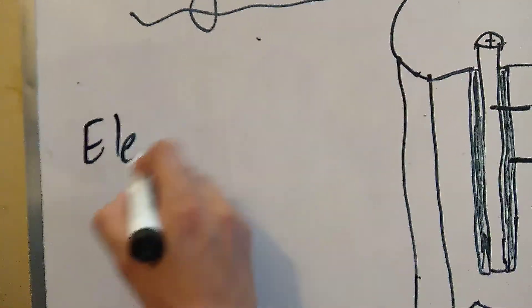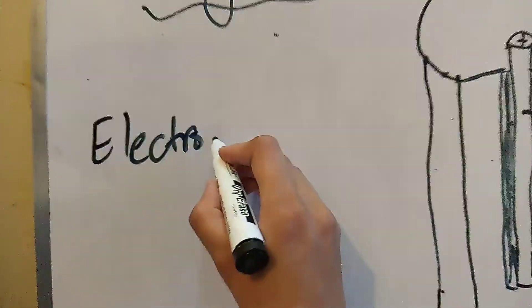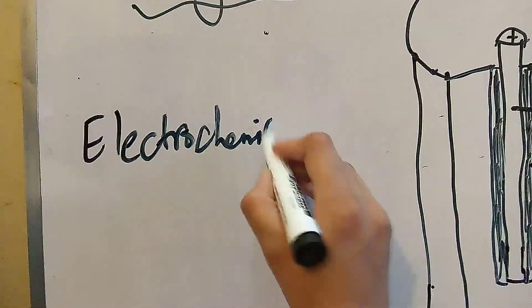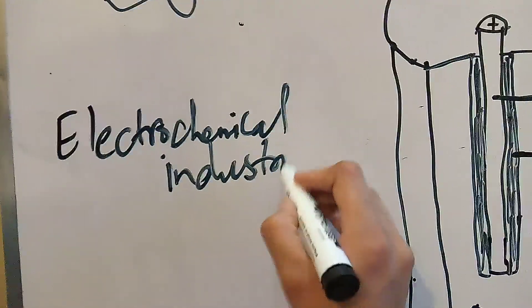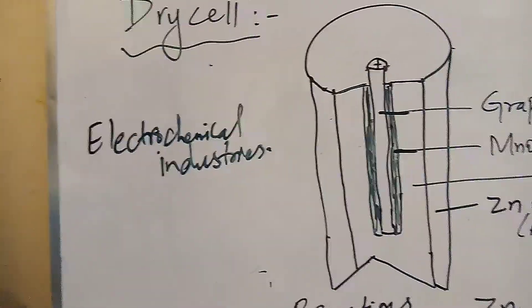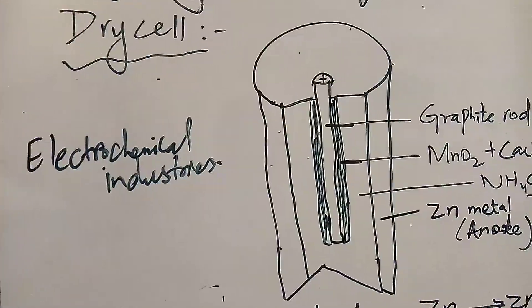Electrolytic cells are used to produce large variety of products. Different products we can use by using these electrolytic reactions.